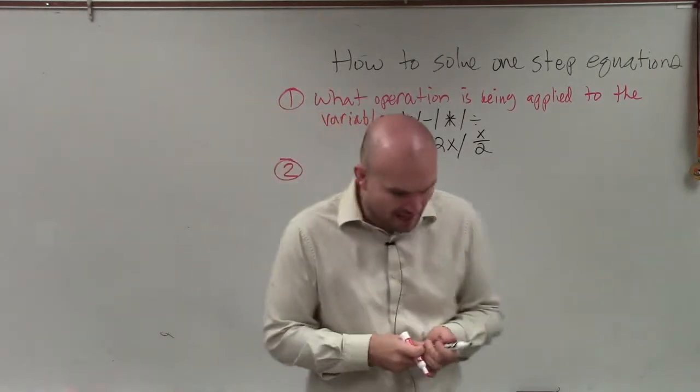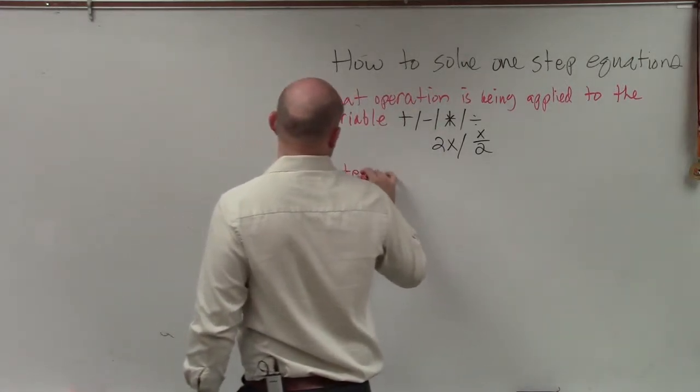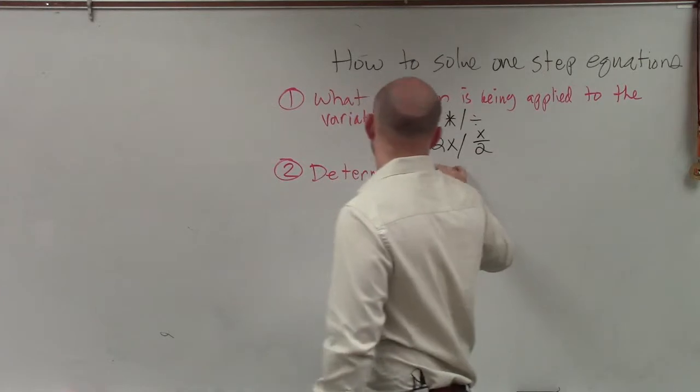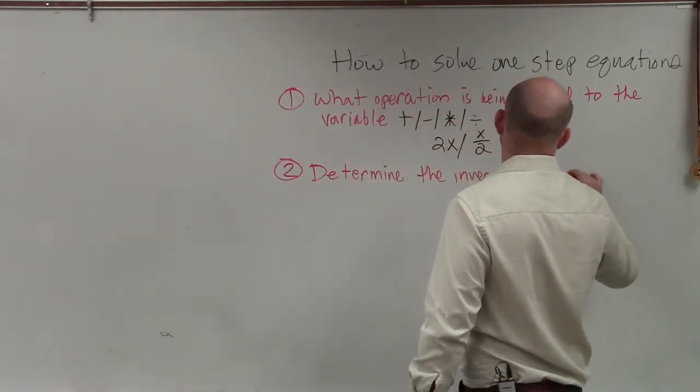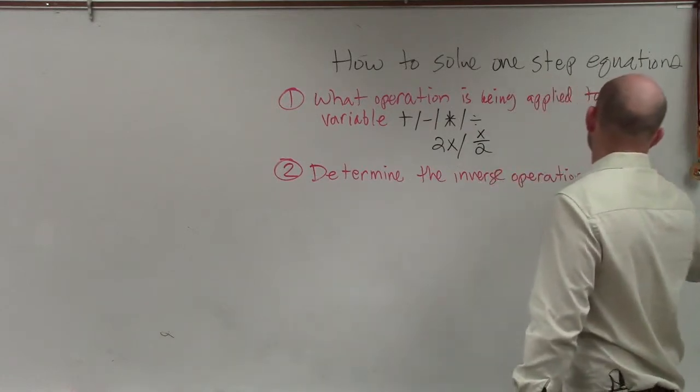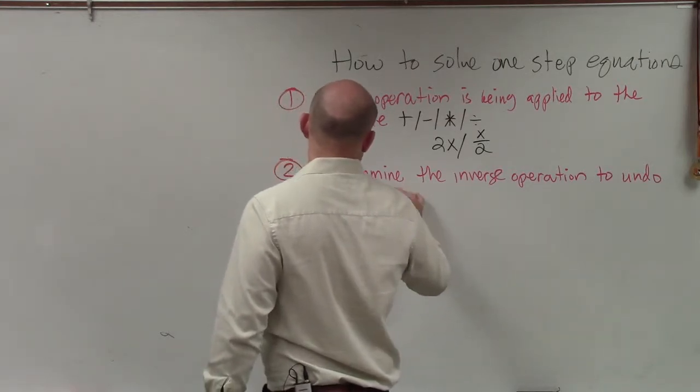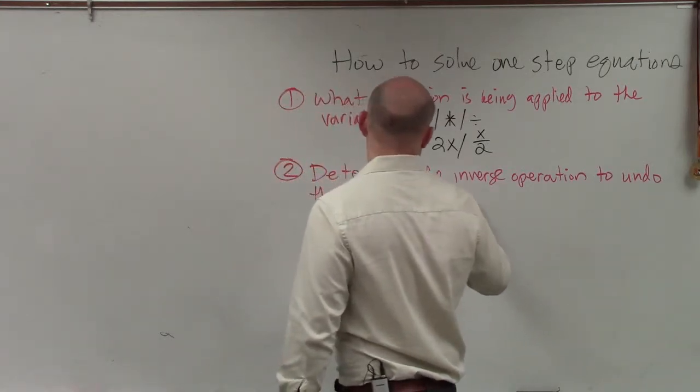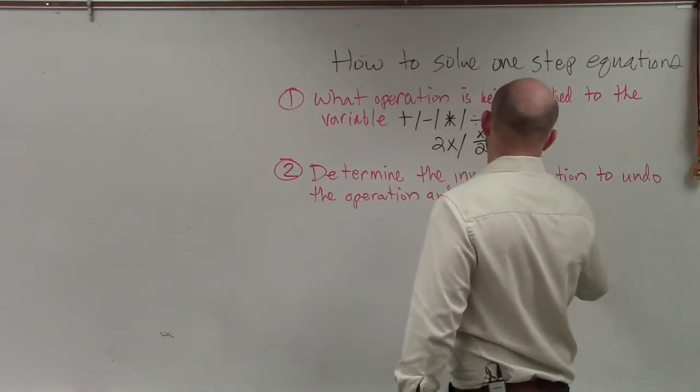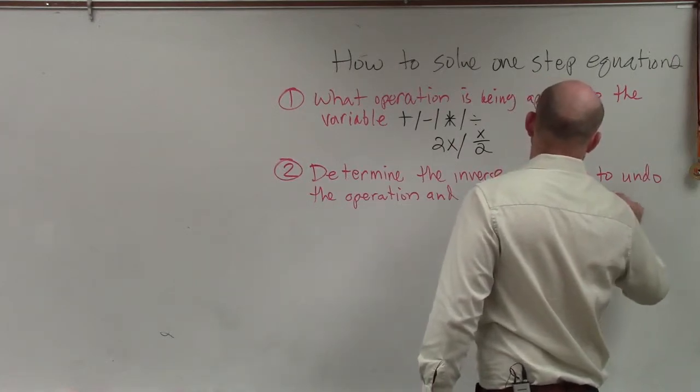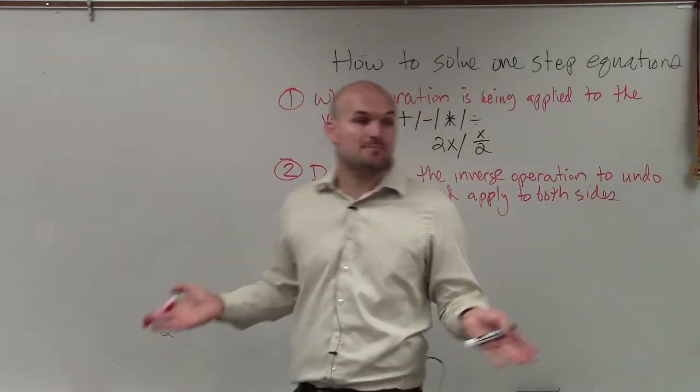What is happening to the variable? Option number two is now we need to—so we identify what's happening. You could say, all right, my variable is being added by 5. My variable is being subtracted by 11. My variable is being multiplied by 1/3. My variable is being divided by 2.